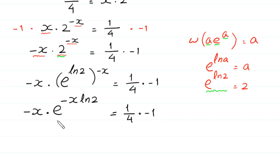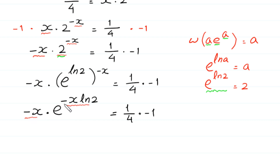Now to use the Lambert W function we must have the same expression in both positions. But here we have negative x times ln 2, and here we have only negative x. To make negative x the same as negative x times ln 2, we multiply both sides of this equation by ln 2.